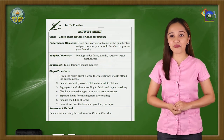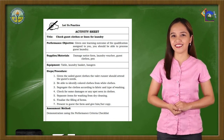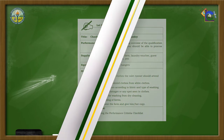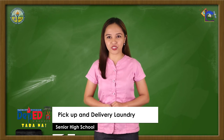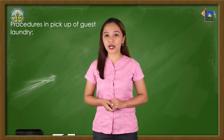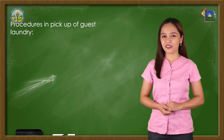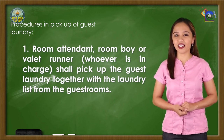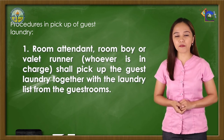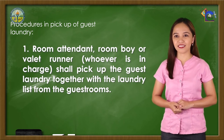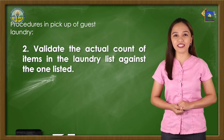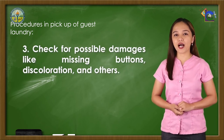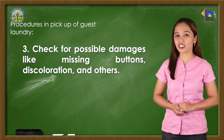Well, nice going! This time, it's your turn to put into practice. Kindly refer to your module on page 9. Since we are through with processing guest laundry, let us now examine the procedures for pick up of guest laundry. Number 1: The room attendant, room boy, or valet — whoever is in charge — shall pick up the guest laundry together with the laundry list from the guest rooms. Number 2: Validate the actual count of items in the laundry list against the one listed. Number 3: Check for possible damages like missing buttons, discoloration, and others.